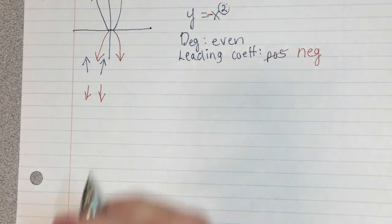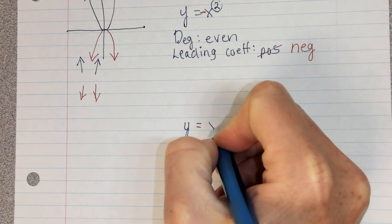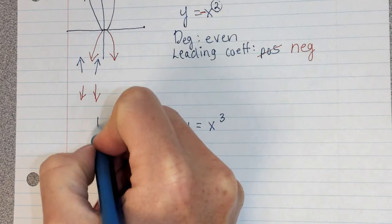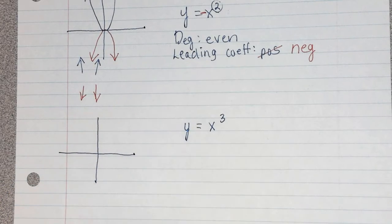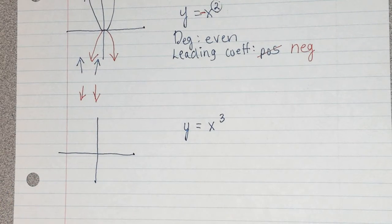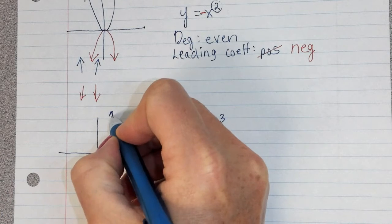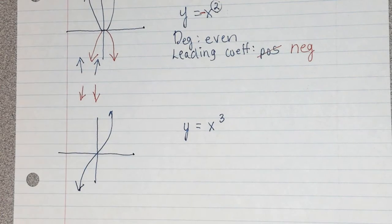What about if we change the degree though? Let's say we now have an odd function like x to the third. You should know what x to the third looks like, right? It's kind of this kind of shape.